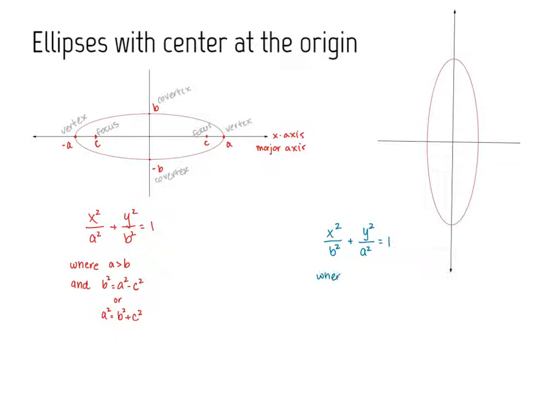Similarly, we can define the equation of the ellipse whose major axis is along the y-axis as x squared over b squared plus y squared over a squared equals 1. Again, a is still bigger than b. Because of the orientation of this ellipse, a is the larger number and it is under the variable y.